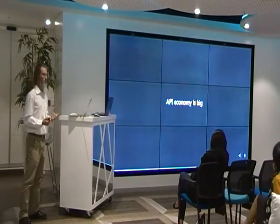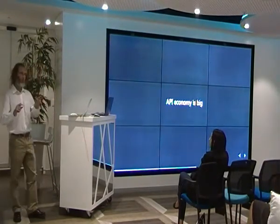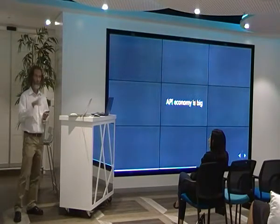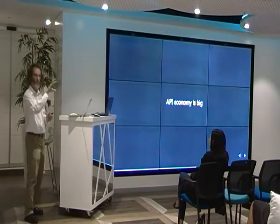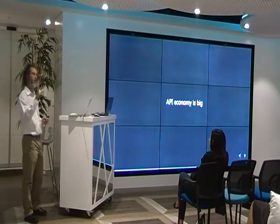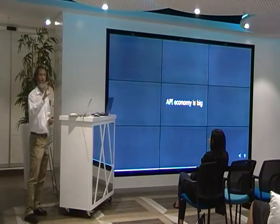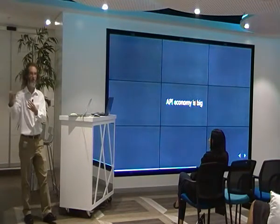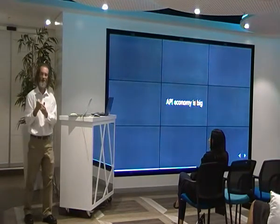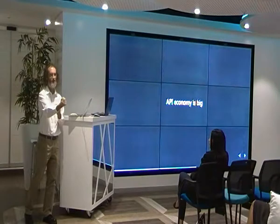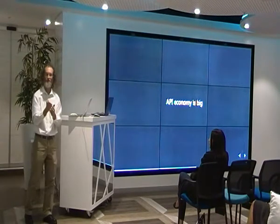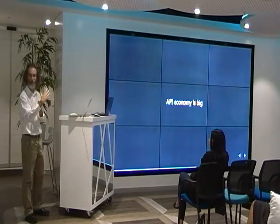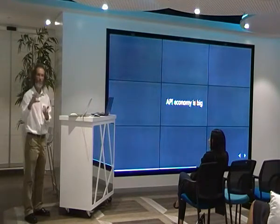The API economy is big. Companies make available bits of functionality via the web. You build an application at core and just call these bits. You can use IBM, you can do speech recognition with Google — so you talk to it, get some text back, and send that text to IBM Watson to process it further. If the user isn't aware of it, in the background you can mix and match all over.